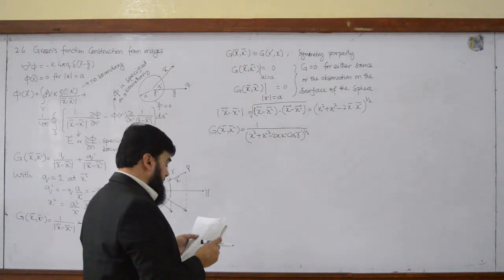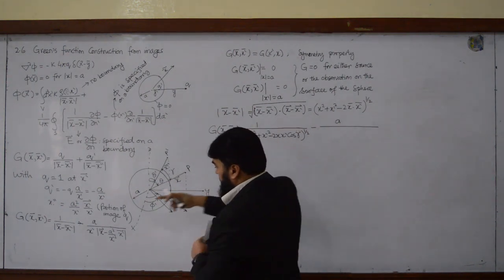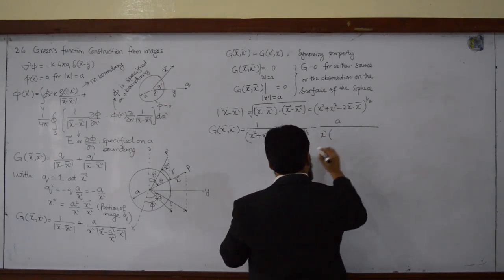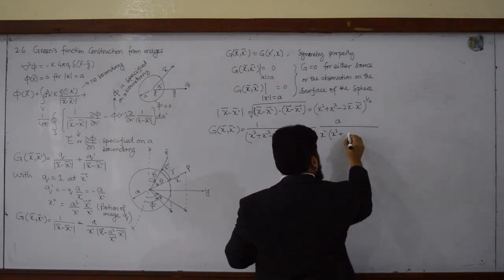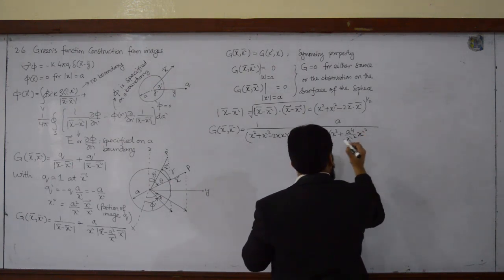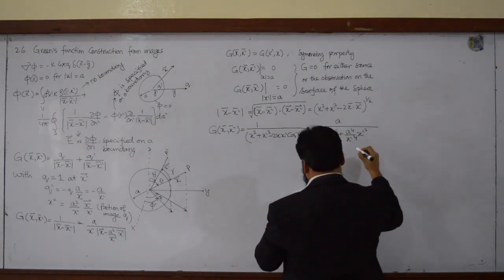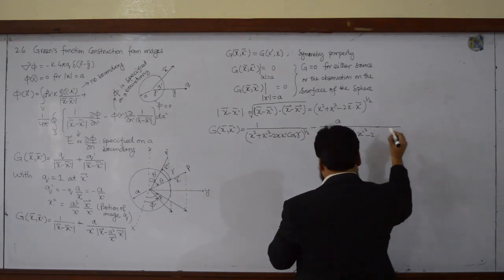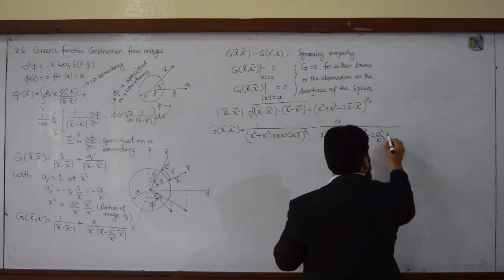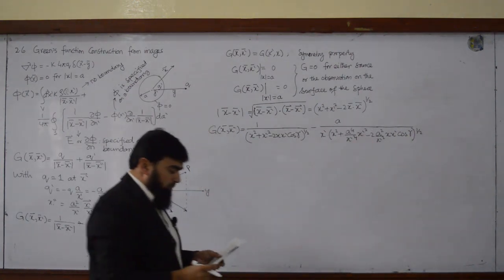For 1 over |x minus x prime| it will be equal to this expression, minus a over x prime times the rest: x squared plus a⁴ over x prime squared, minus 2 times a squared over x prime squared times x x prime cos(gamma). It will be equal to this.